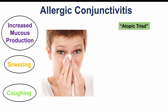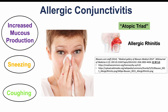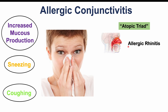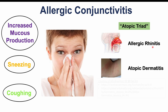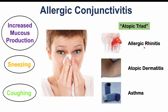Allergic conjunctivitis is associated with what we call the atopic triad — three conditions all starting with the letter A. One is allergic rhinitis, also known as hay fever, where patients have excessive sneezing and runny nose, with runny and itchy eyes. Patients can also experience atopic dermatitis, also known as eczema, and asthma can occur as well. If you have one of the atopic triad conditions, 80% of the time you will have another one or both — they are very highly associated with each other.